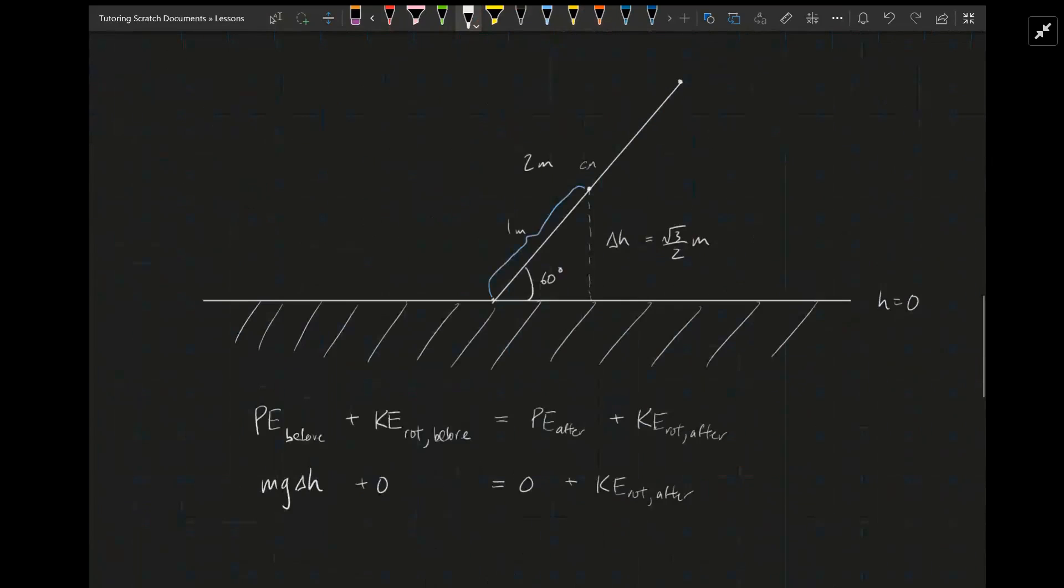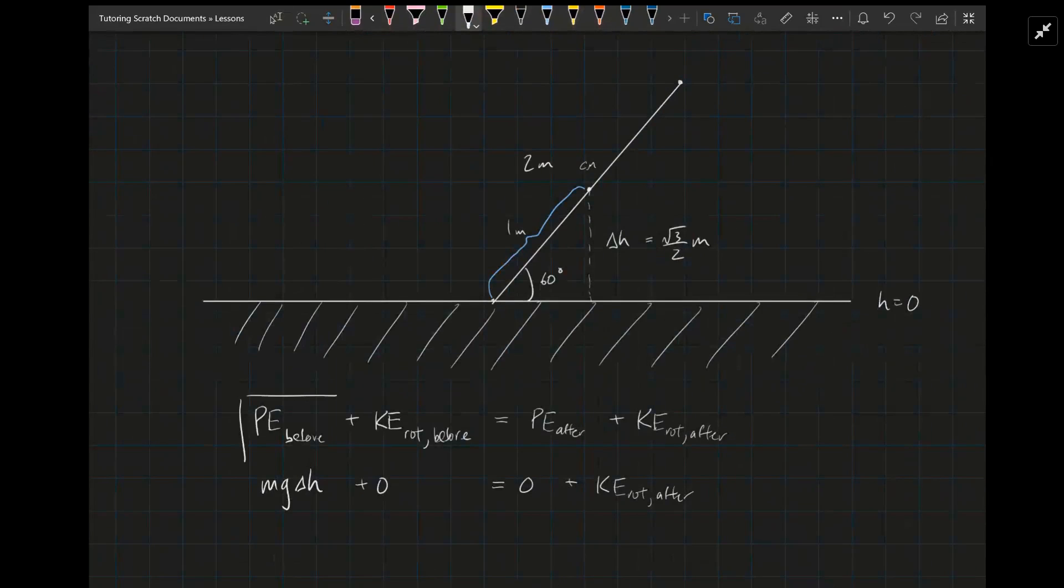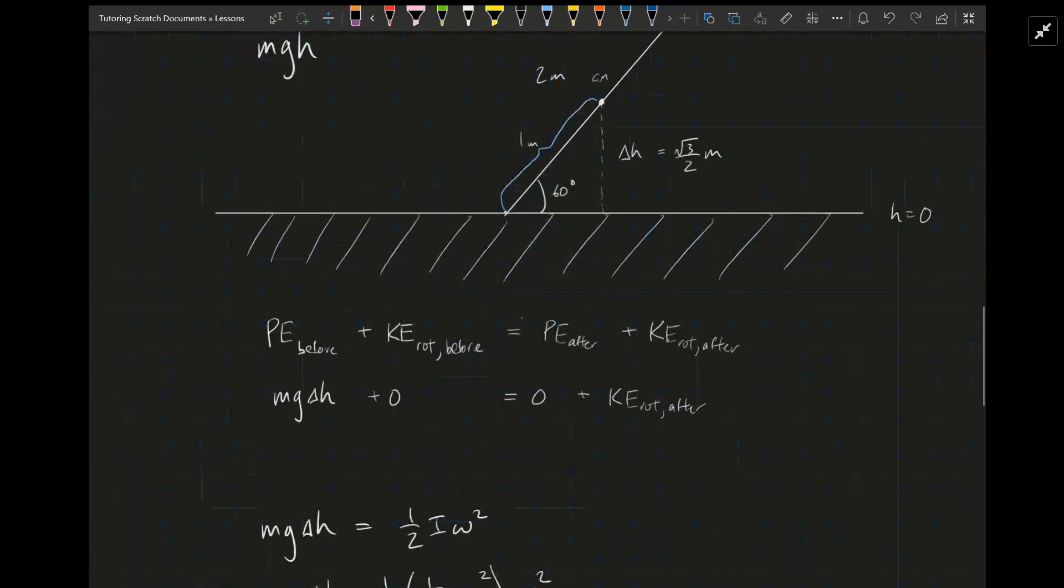If we look at this situation, the potential energy of the rod before is mgh. m is the mass of the rod, g is g, but what's h? h is where the center of mass of the rod is. It's actually not at the end, it's in the middle of the rod, at a length of one meter as I've drawn here. That's mg delta h, and we'll come back to h in a minute.